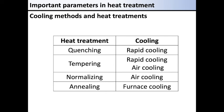The cooling rate defines the type of heat treatment. Quenching is done by rapid cooling. Tempering is done by rapid cooling or air cooling. Normalizing is done by air cooling. Annealing is done by furnace cooling.